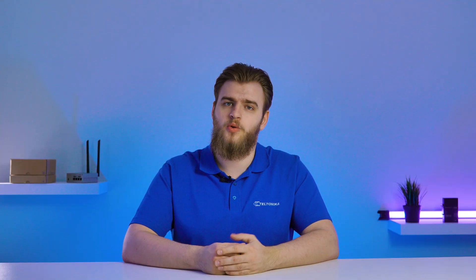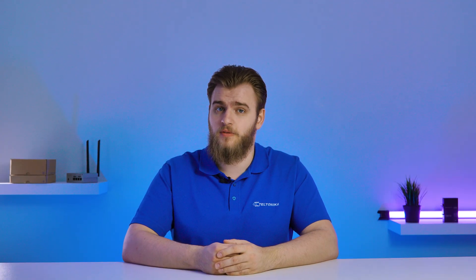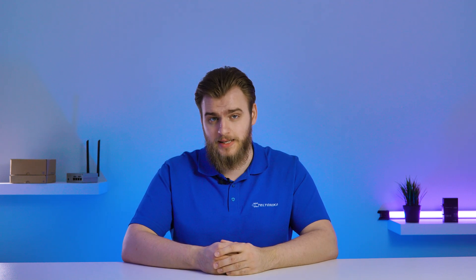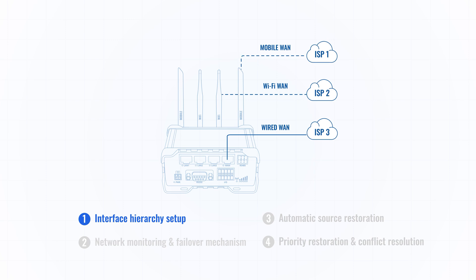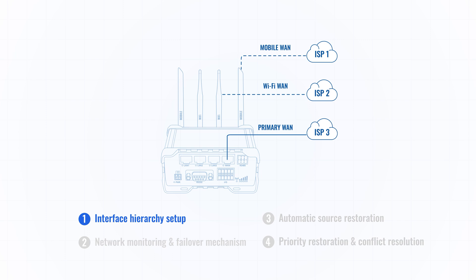Failover is also responsible for automatically switching between these interfaces depending on the hierarchy you set. Let's say we choose to make wired connectivity our primary internet source, mobile connectivity as the secondary, and Wi-Fi as our last resort.